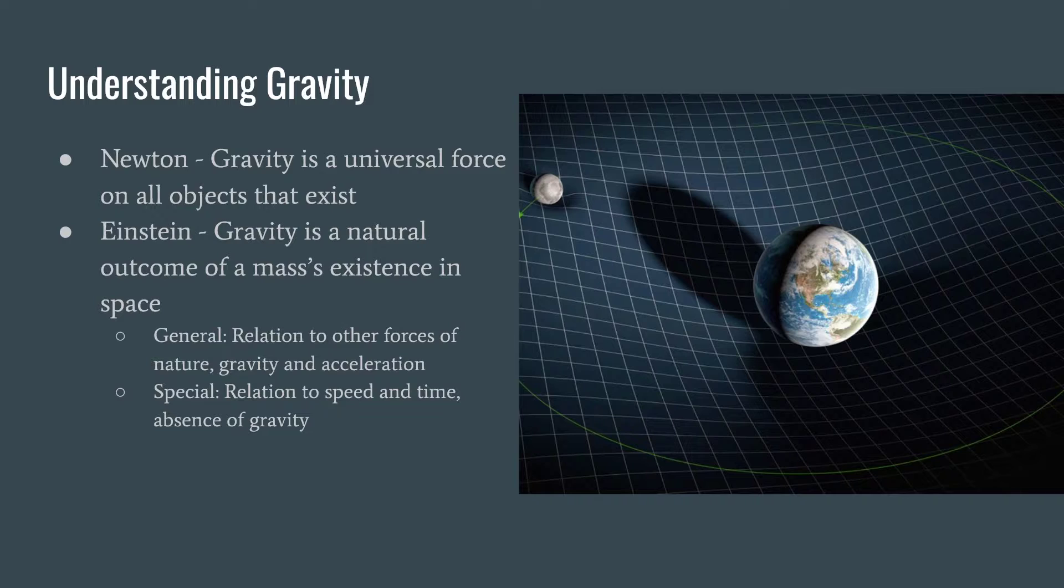So first let's take a look at our understanding of gravity. We had to start out at Newton and his theory was that gravity is just universal force on all objects that exist. So he was very much ahead of his time when it came to the understanding of gravity and the math that he used to explain it. It was not necessarily accurate, but for the time it was well ahead.